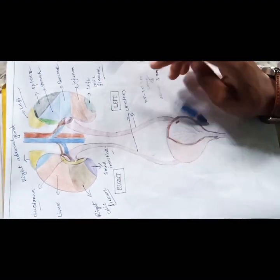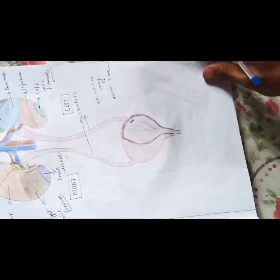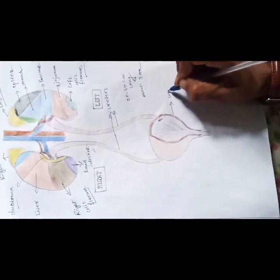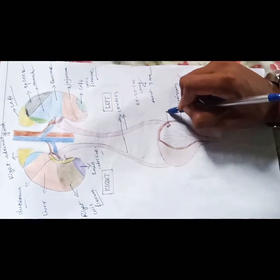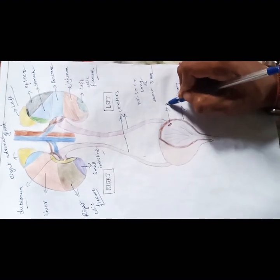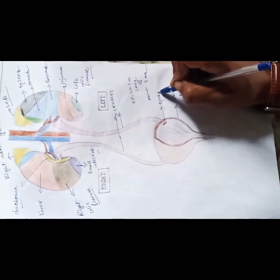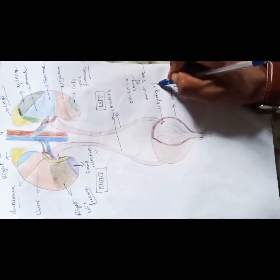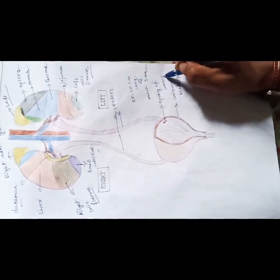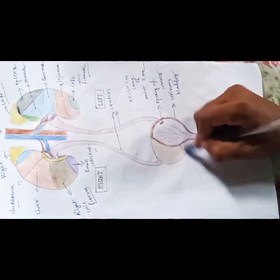Now I am going to discuss about the urinary bladder. In this diagram you can see the urinary bladder, the openings of the ureters, and the bladder wall.